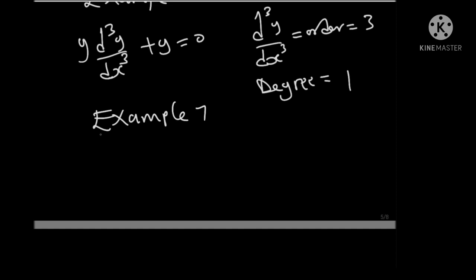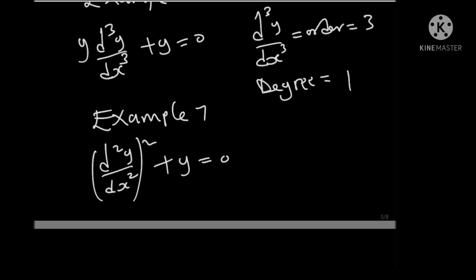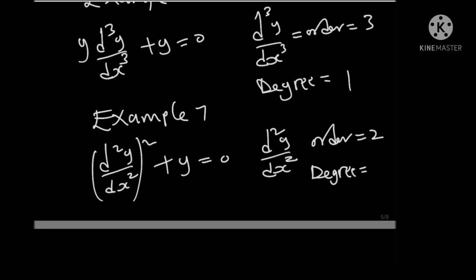Example 7: suppose we have (d squared y over dx squared) squared plus y equals to 0. In this differential equation, we only have one differential coefficient: d squared y over dx squared. Therefore, the order is 2 and the degree is 2, since the power of the highest differential coefficient is 2.